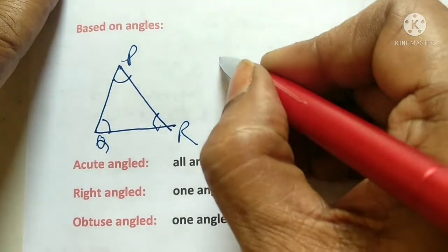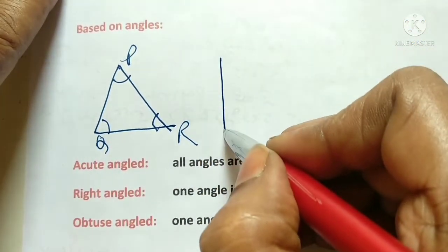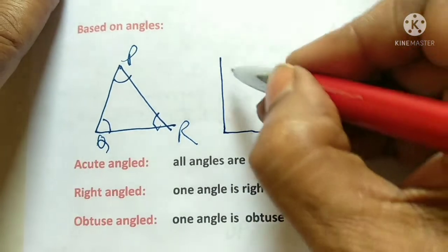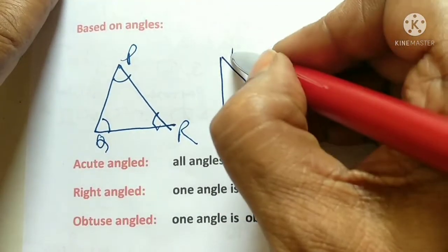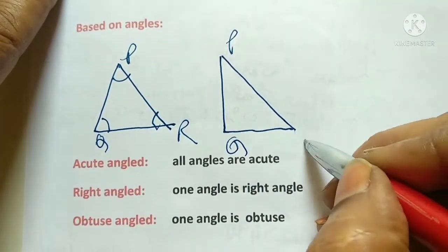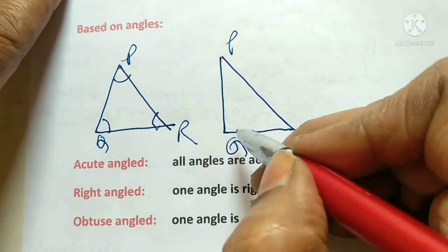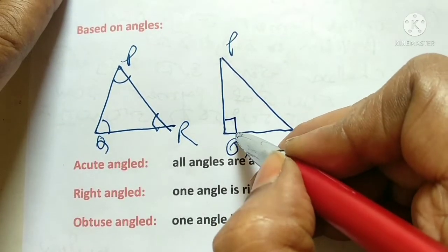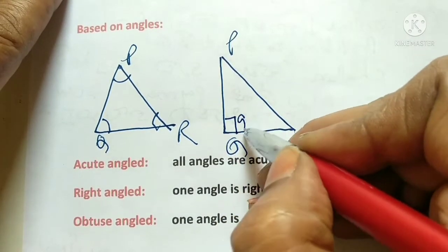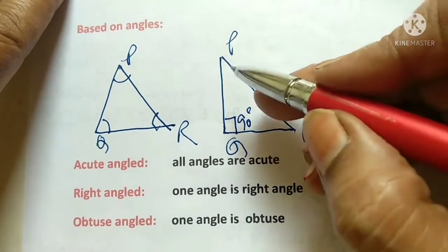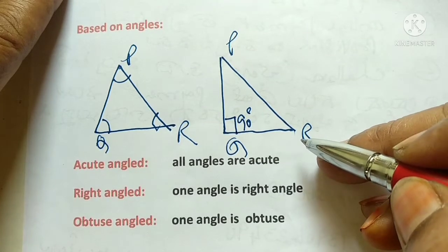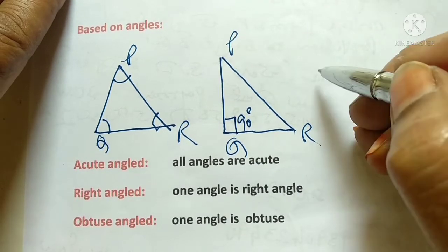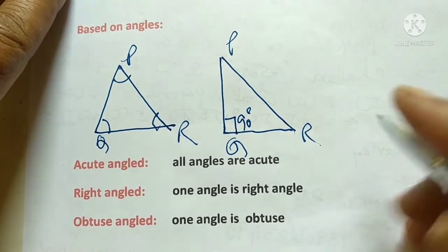What is a right angle triangle? We draw triangle PQR where one angle is the right angle — it is 90 degrees. Angle PQR is 90 degrees, so this is called a right angle triangle.